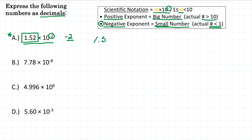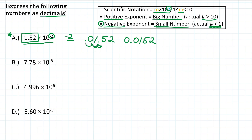So we write the first part of the scientific notation: 1.52. Because our exponent is negative 2, we're going to move the decimal two places. Because it's negative, we want to make the number smaller, so we go to the left — 1, 2 — and we add a zero because we have nothing in that spot. Rewriting this number, we get 0.0152.